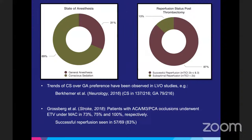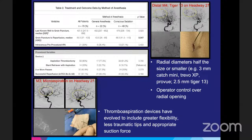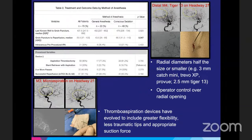Trends favor conscious sedation, and reperfusion in distal vessels ranges 75 to 85% in the literature. Intravenous TPA was given in 30% of cases. Procedurally, aspiration thrombectomy was used in about 80% of patients, 42% needed three or more passes, and successful reperfusion was obtained in 87% of cases.